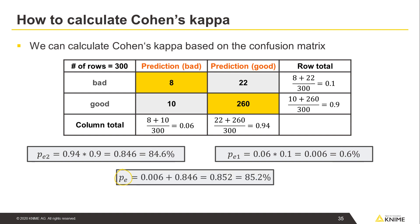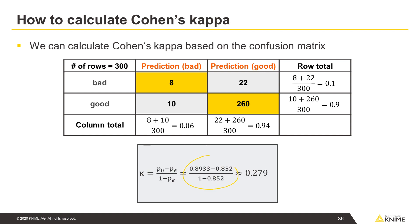To get the probability of a correct prediction by chance to any class, PE, we sum up these two probabilities. We use this result and the overall accuracy value to calculate Cohen's kappa and get 0.279, the same as in the accuracy statistics that we checked before.